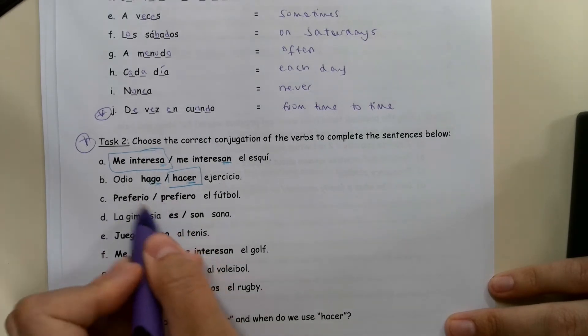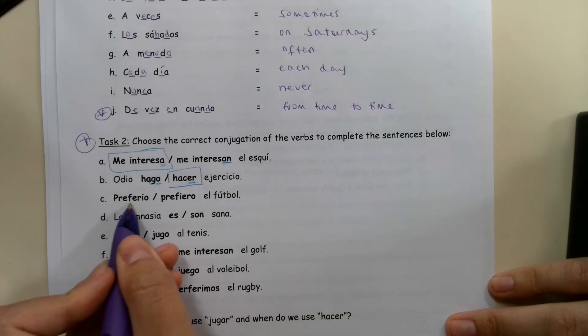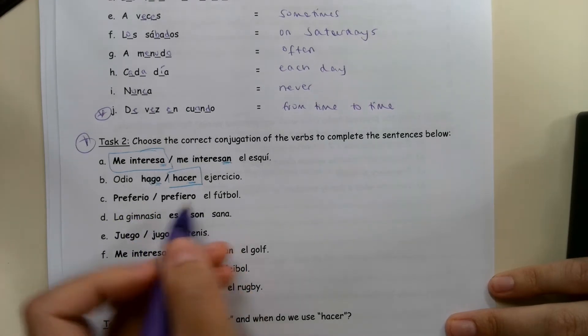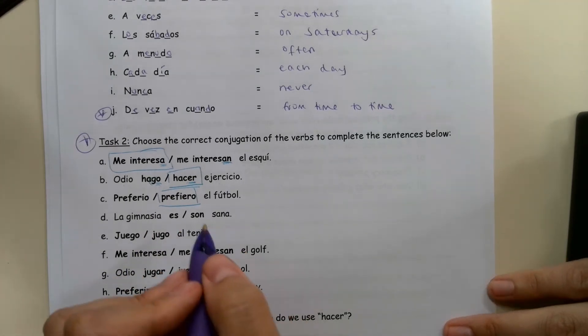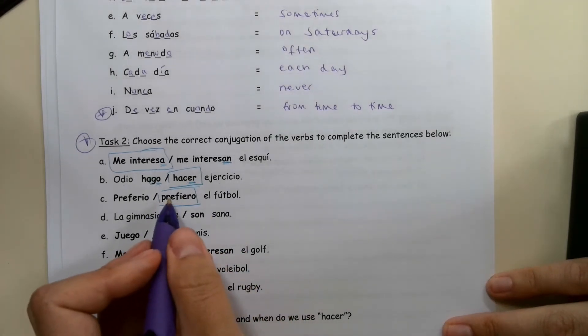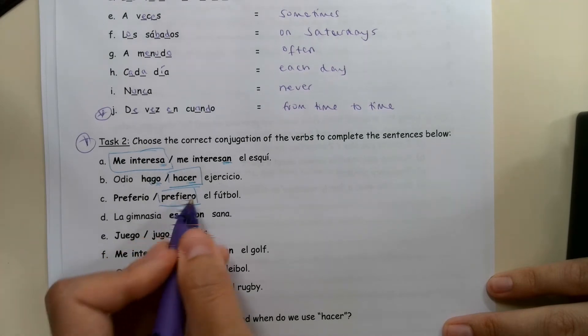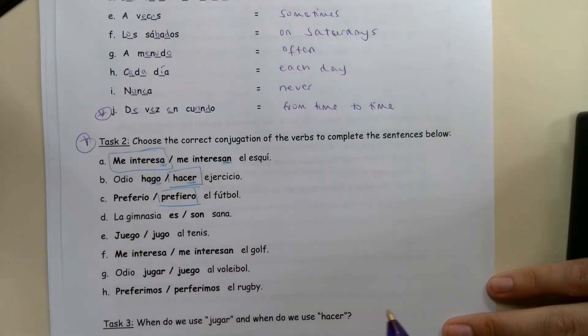This one is just a case of spelling. So we just needed to know which one is the correct spelling. Preferio or prefiero. This second one is our correct spelling. Now if you don't know this one, then you just need to get into the practice of that. Unfortunately, there's no other way to do it other than learning your spelling by practicing it.